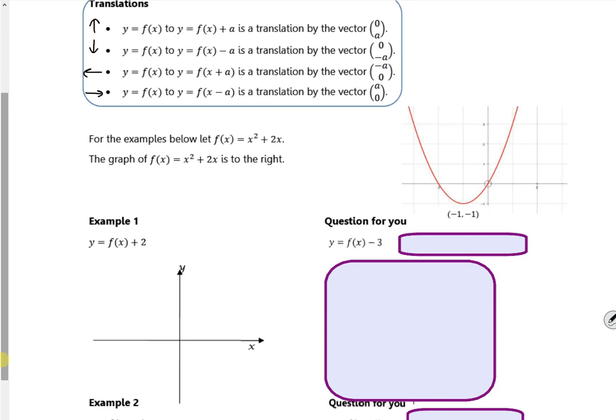Right, so I've got x squared plus 2x, it's got the vertex at minus 1 minus 1, so we're going to graph it and see what actually happens to the vertex as we go.